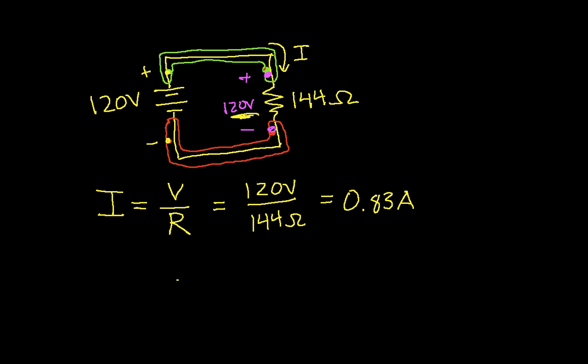And the voltage source will make sure, again, it will do whatever it has to do to make sure that the voltage across the resistor is 120 volts. In this case, what the voltage source has to do to make that happen is supply a current of 0.83 amps.